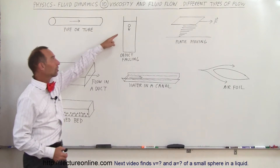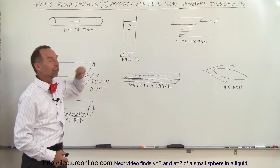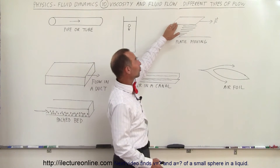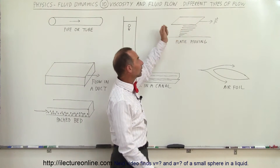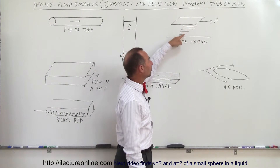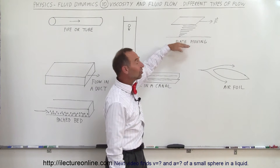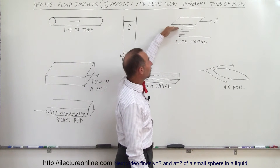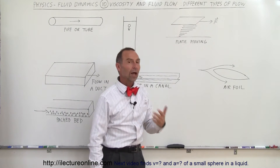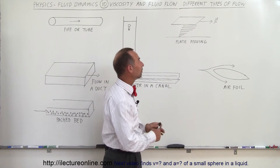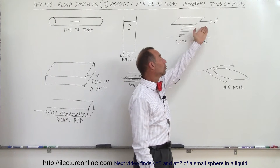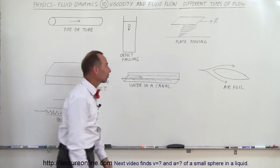Also, when an object like a sphere is falling through a viscous liquid to the bottom in a pipe, or sometimes we may have a plate of some sort that is on top of the fluid, and as you're pulling on the plate, the velocity of the fluid between the plate and the bottom, which is stationary, would be different depending upon whether the fluid is close to the moving plate or close to the non-moving floor of the container.